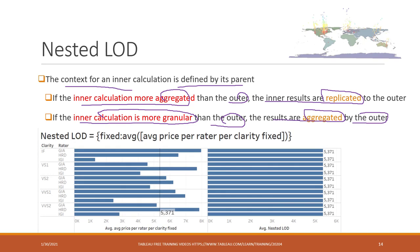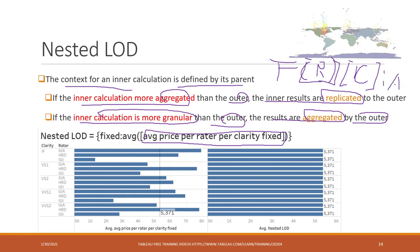Let's see one example. The inner is average price per rater per clarity — that is fixed rater, clarity, colon, average price. The outer is fixed at the table level. So now you can think: which is more granular — the outer or the inner? In this case, the outer is at the table level, so the inner is more granular. Therefore, the inner results are replicated to the outer because the outer is at the table level.